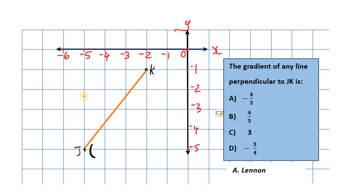J is located at negative 5 on the x-axis and negative 5 on the y-axis. We have the two axes — the x-axis that runs horizontally and the y-axis which runs vertically. The location of K is negative 2 on the x-axis and negative 1 on the y-axis.